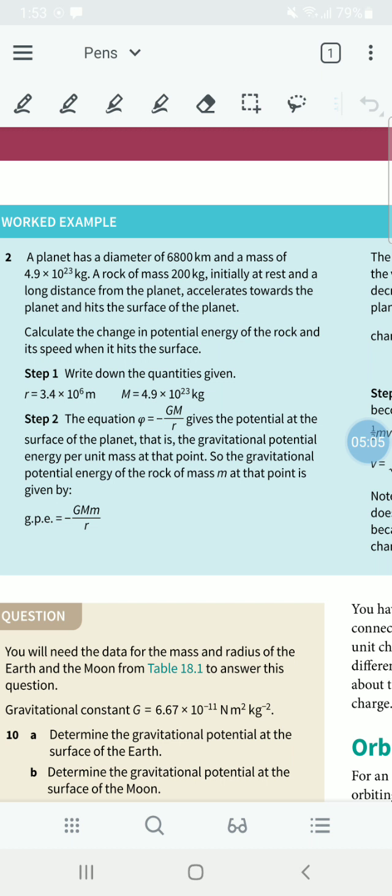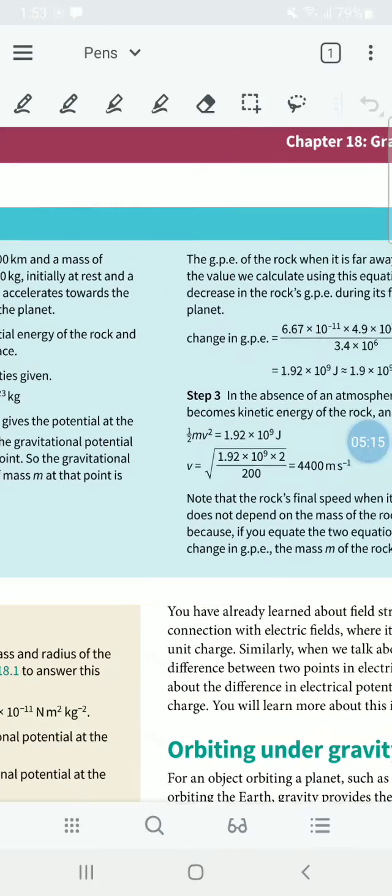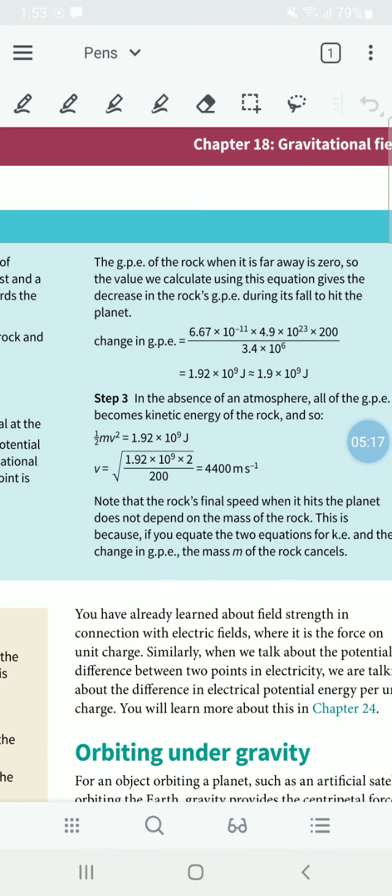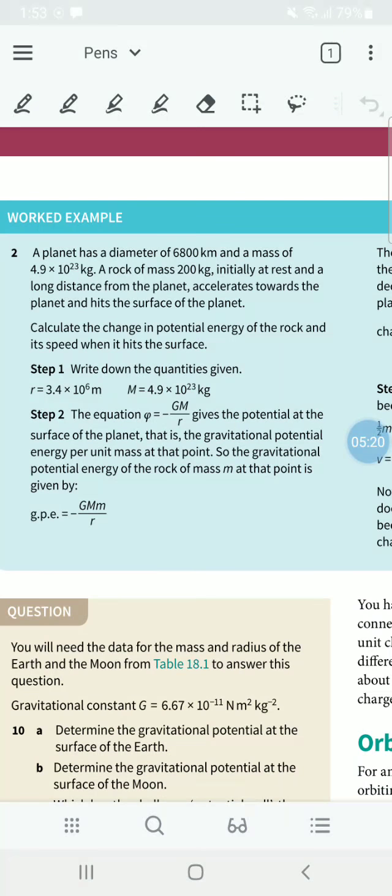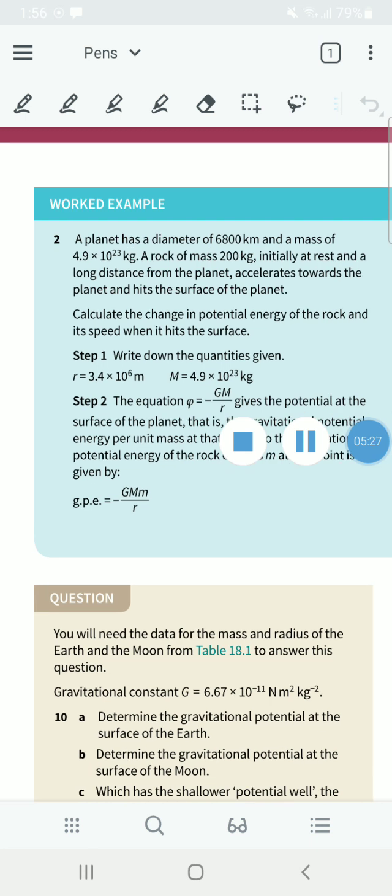You use these values to figure out the details and find the answer for the question. So r is 3.4 × 10^6 meters, then M is 4.9 × 10^23 kilograms. These are the details that they have given us. We have to write down these things first.